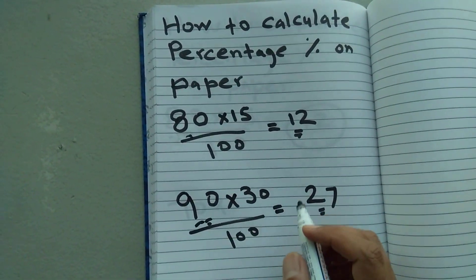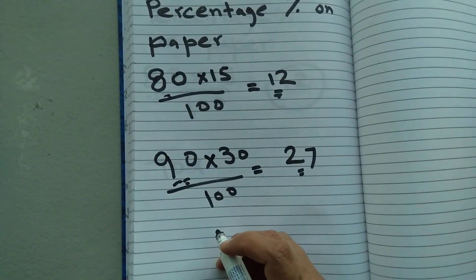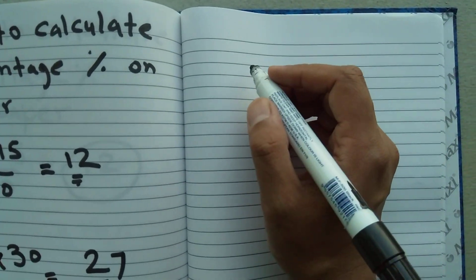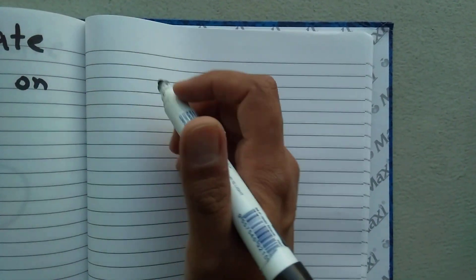The answer will be 27. So this 27 is the 30% of 90. Let me show you one more example - it's a little different example.